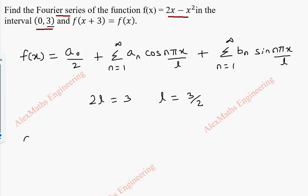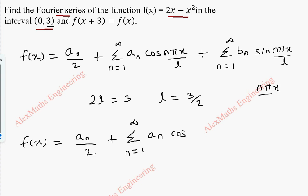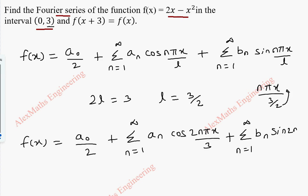Substituting l equals 3/2 in the above formula, we get f of x equals a0 by 2 plus summation n equals 1 to infinity, an cos(2nπx/3), plus summation n equals 1 to infinity, bn sin(2nπx/3).